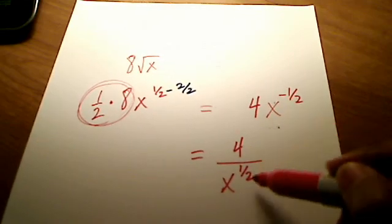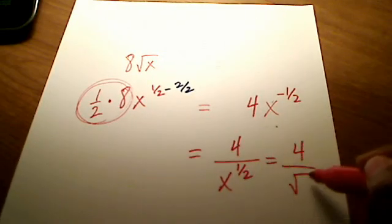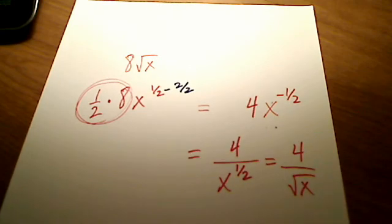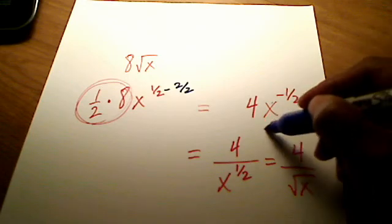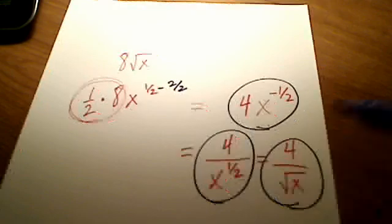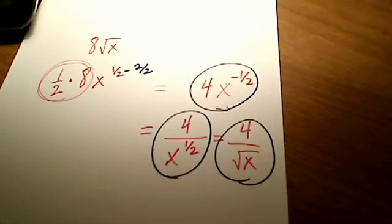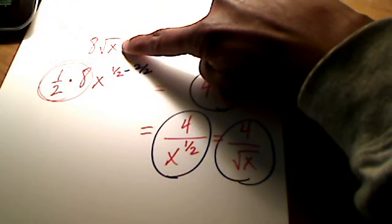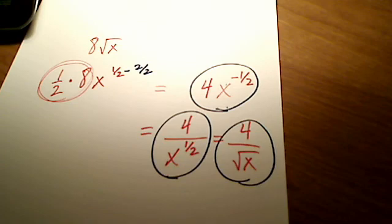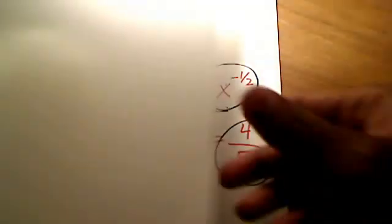And again, if you don't like fractional exponents, you can even go one step further and write it this way if you want. But all three of these, I hope you see, all three of these forms right here, I'll circle them for you, are equivalent to each other. This form here, that form there, and that form there. All three of those forms are exactly the same. So let's keep that in mind. If you want to find the derivative of 8 square root x, you can write it in any one of those two forms. 4 is in the numerator, square root of x is in the bottom.